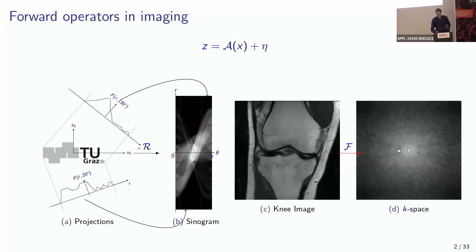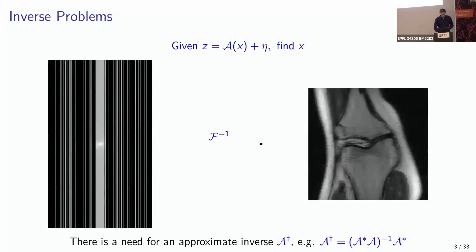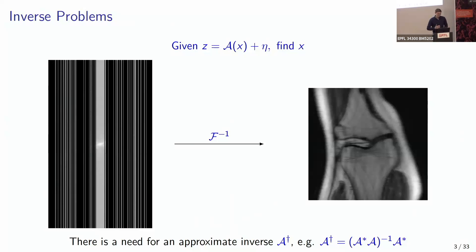In MRI we have a Fourier transform and possibly a subsampling operator. This is well-posed when k-space is fully sampled — just apply the inverse Fourier transform. But in practice, k-space is subsampled: more measurements in the center (low frequencies) and fewer at high frequencies — so-called Cartesian subsampling. Applying the inverse Fourier transform with zero-filling produces backfolding artifacts, requiring an approximate inverse.